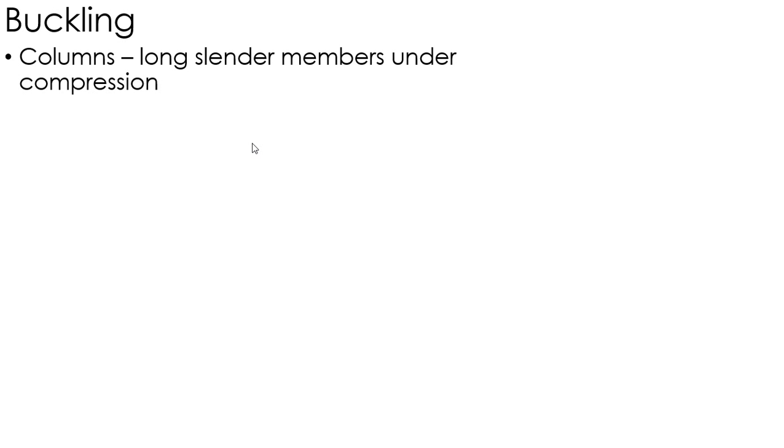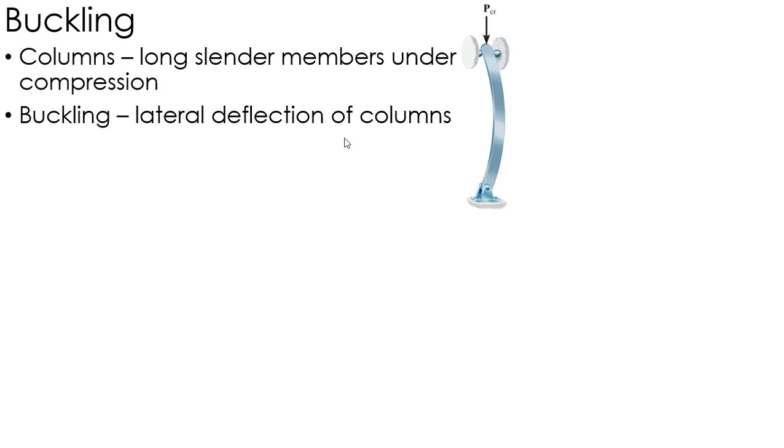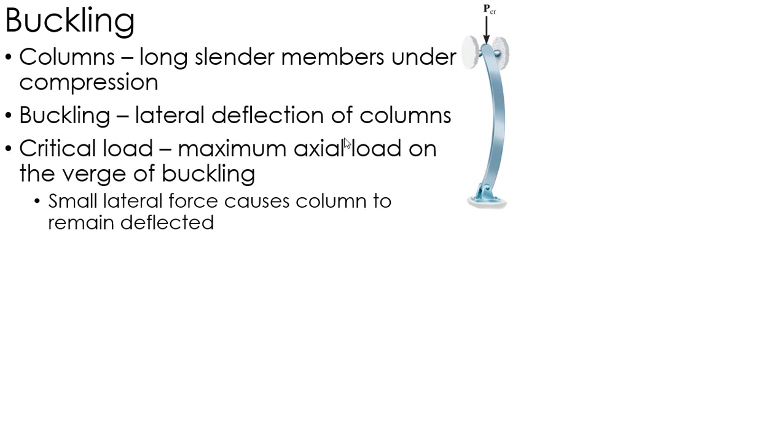We're going to talk about buckling. Buckling occurs in columns, and by columns we mean a long slender member that's under compression. Buckling is basically the lateral deflection of the column.